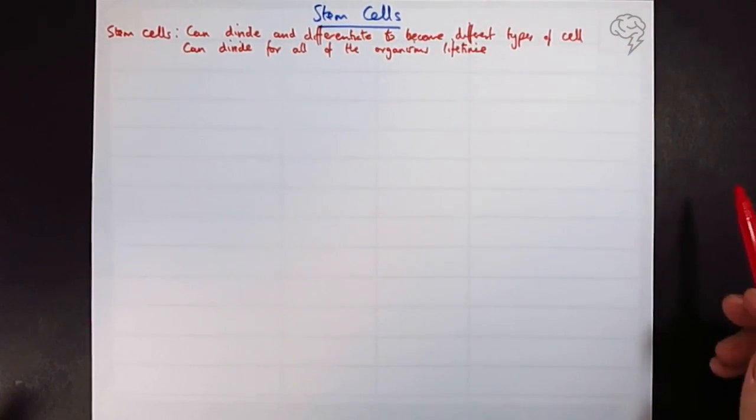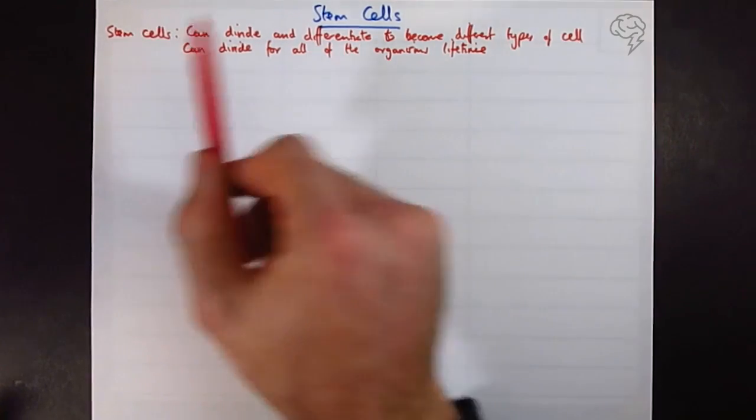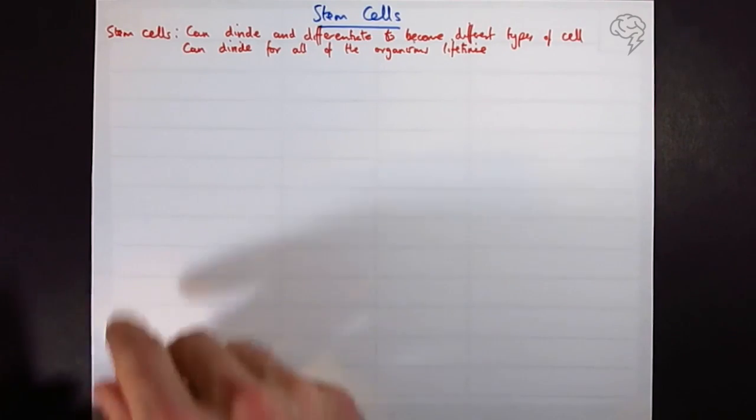So most cells, once they've done their job, they've been around for a certain length of time, they're going to go through programmed cell death, apoptosis, and they just wipe themselves off the face of the map. Then the stem cell is going to create another cell to replace them.